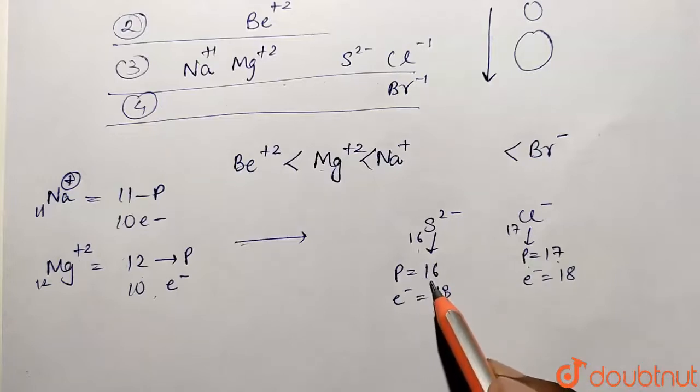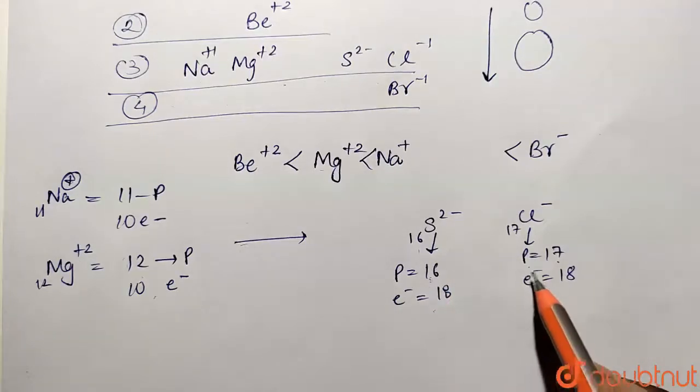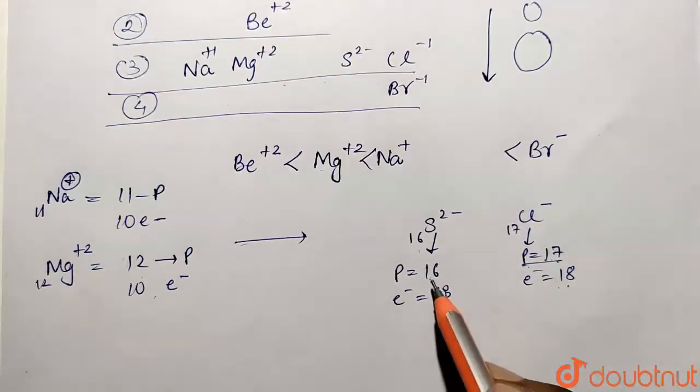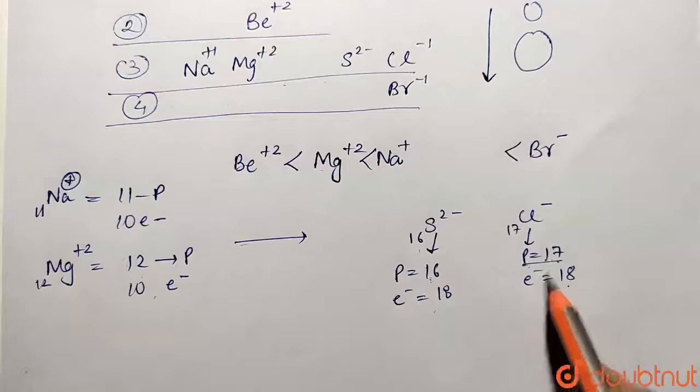So here more number of protons are attracting that much amount of electrons, and here less protons are there. So comparatively, this is going to be smaller size and this is going to be bigger in size.